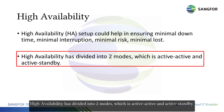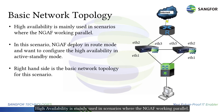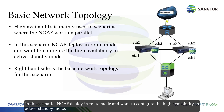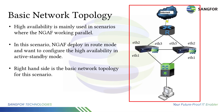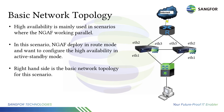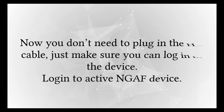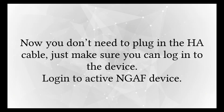Active-active and active-standby. High availability is mainly used in scenarios where the NGAF is working in parallel. In this scenario, the NGAF is deployed in route mode and we want to configure high availability in active-standby mode. On the right-hand side is the basic network topology for this scenario.